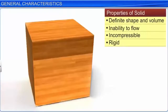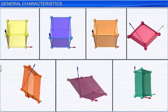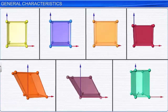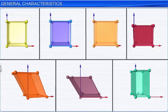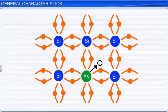Let us take a quick look at how the structure and properties of a solid are correlated to one another. Hence, any change in the structure of a substance changes its properties. For example, the conductivity of silicon increases with the addition of impurities such as arsenic. So, a solid with the desired properties can be prepared by altering its structure.